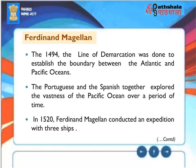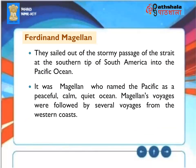Ferdinand Magellan: In 1494, a line of demarcation was established to define the boundary between the Atlantic and Pacific Oceans. The Portuguese and Spanish together explored the vastness of the Pacific Ocean. In 1520, Ferdinand Magellan conducted an expedition with three ships, sailing out of the stormy passage of the strait at the southern tip of South America into the Pacific Ocean. It was Magellan who named the Pacific as a peaceful, calm, quiet ocean, and his voyages were followed by several subsequent voyages from the western coasts.